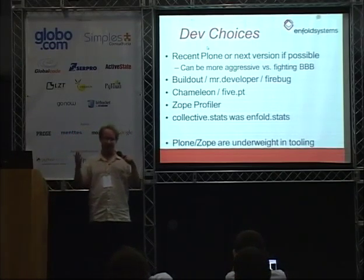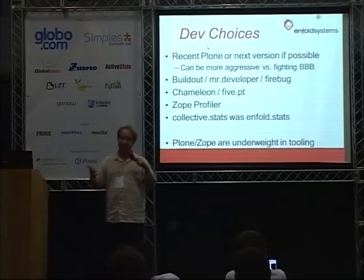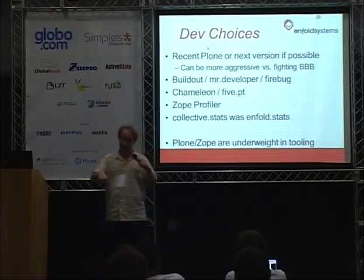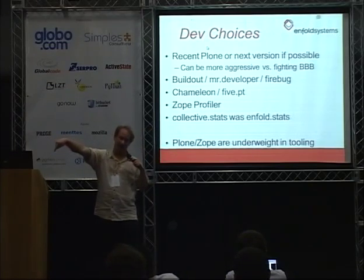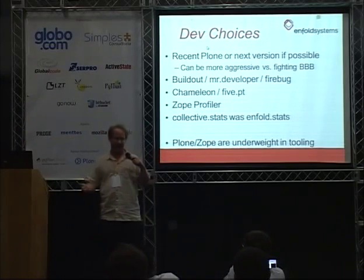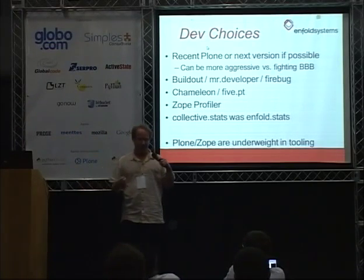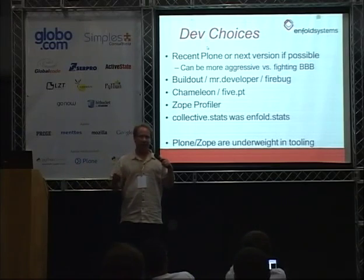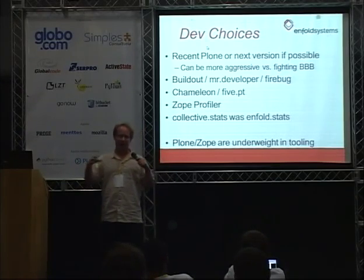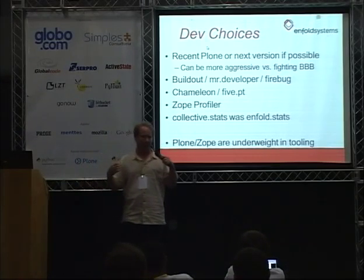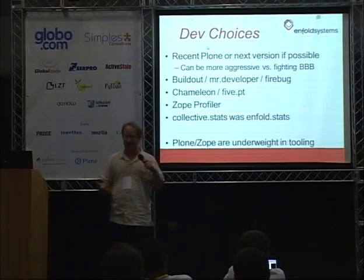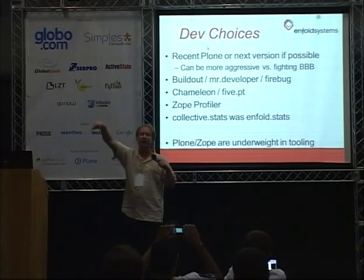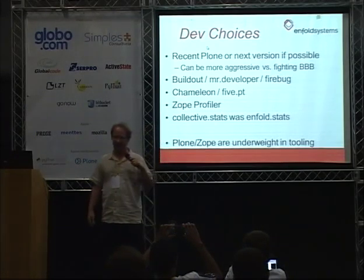When you're actually building a Plone project and you need some sort of scale, it would be very wise to pick the most recent version or the one that's coming up. One of the problems people have is that open source is not commercial software. It doesn't come with a warranty or terms and conditions. You have to be very smart about what you're picking — really, where are you going to land when your project lands.